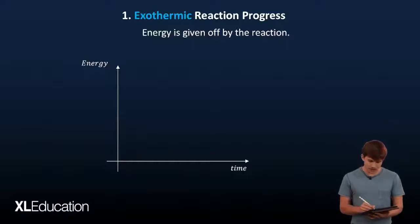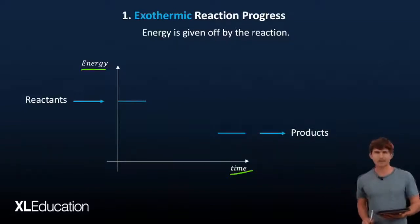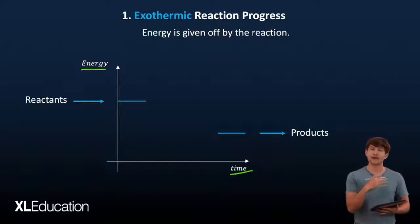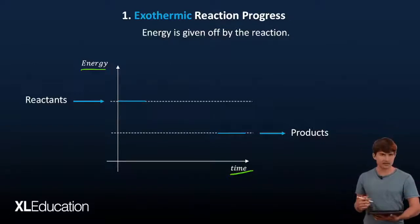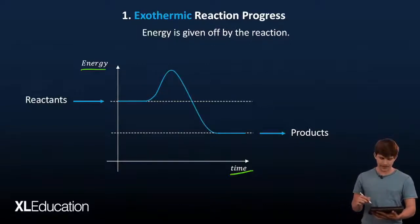We have the reactants at an energy level way up here and the products way down here. We have our lines designating where they are with respect to one another, and it grows, hits a peak, and then dips way down there.